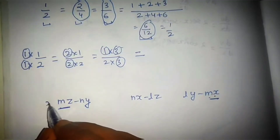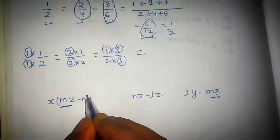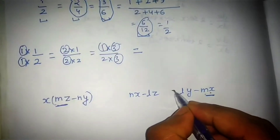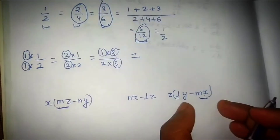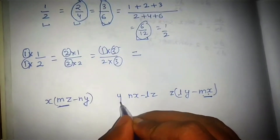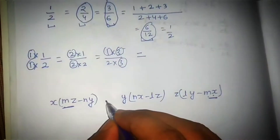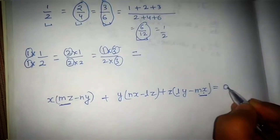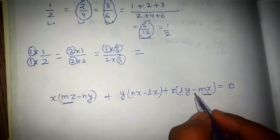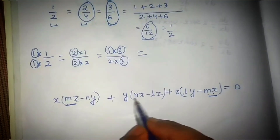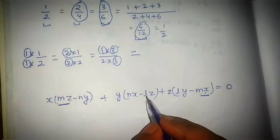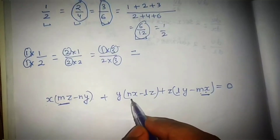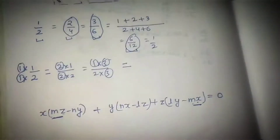If the first denominator is multiplied by x and the third by z, those m-terms cancel. Following the same pattern, multiply the second denominator by y. Now if you add them all: mzx minus mzx cancels, nxy minus nxy cancels, and lzy minus lzy cancels — giving you zero. So the multipliers for the first set are x, y, and z.